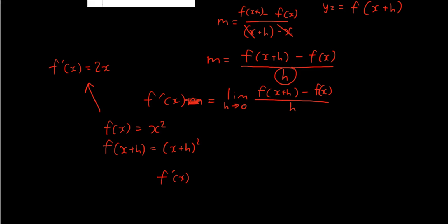Now we can substitute everything into this formula. f'(x) is equal to the limit as h approaches zero of the function f(x+h), which is (x+h) squared, minus f(x), which is x squared, over h.